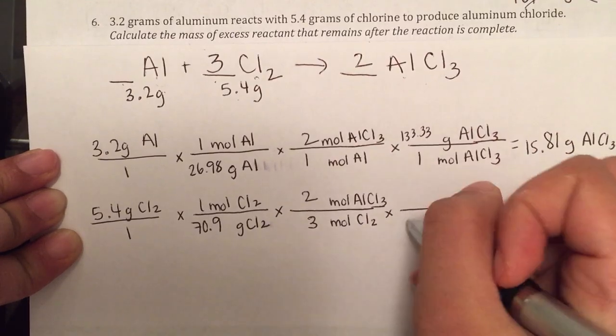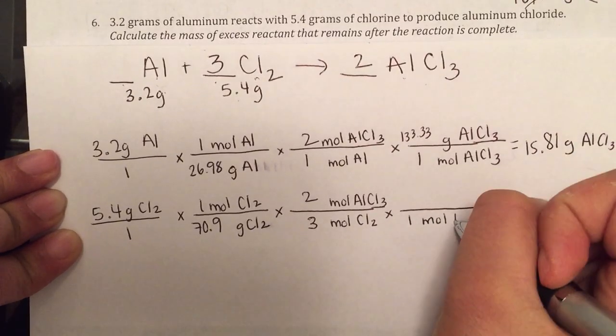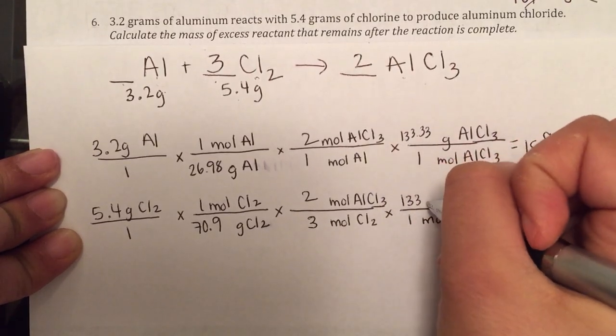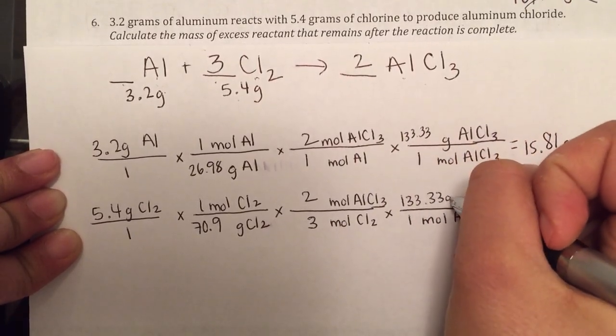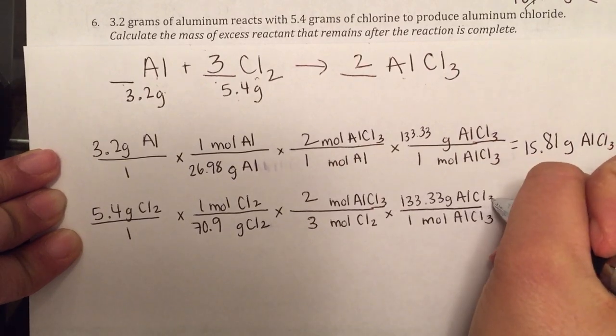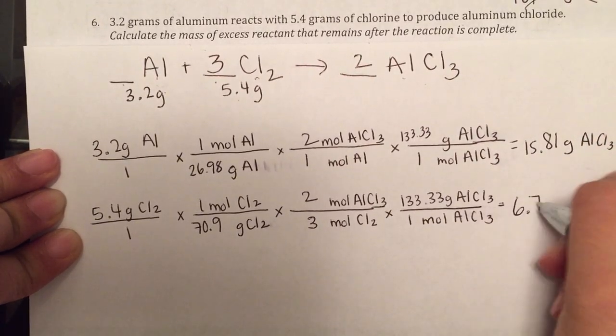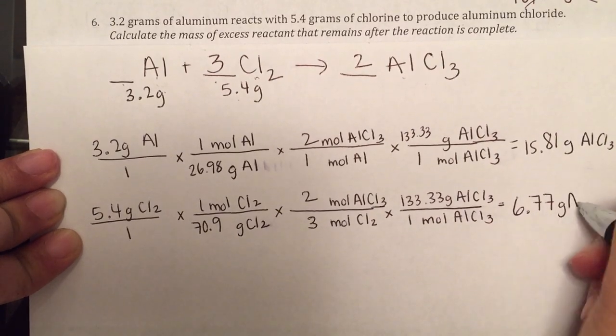And then we can go into grams of aluminum chloride. If we do the math here, 6.77 grams of aluminum chloride.